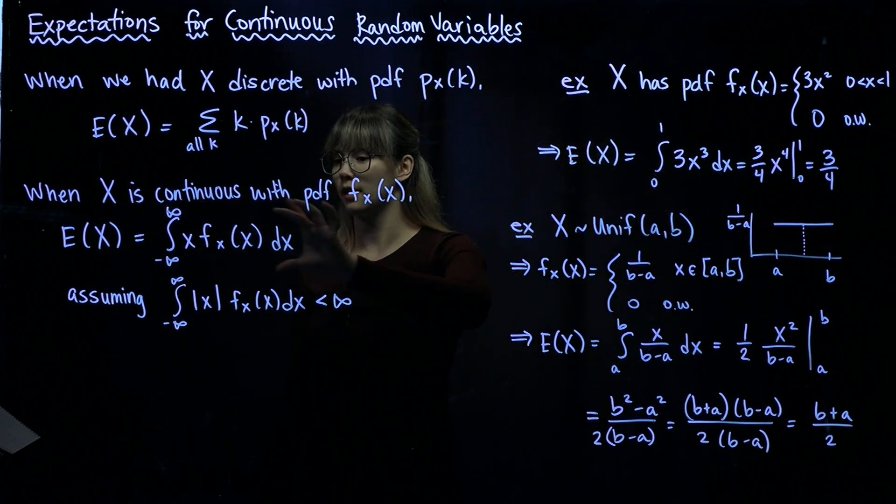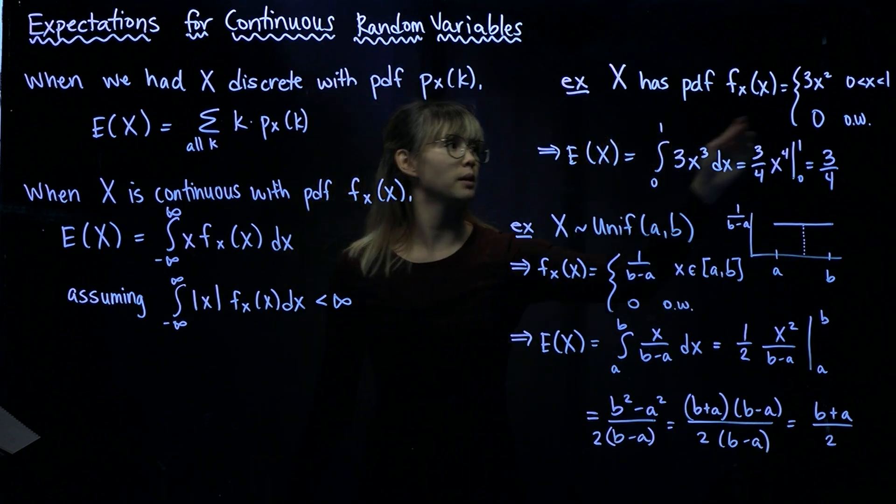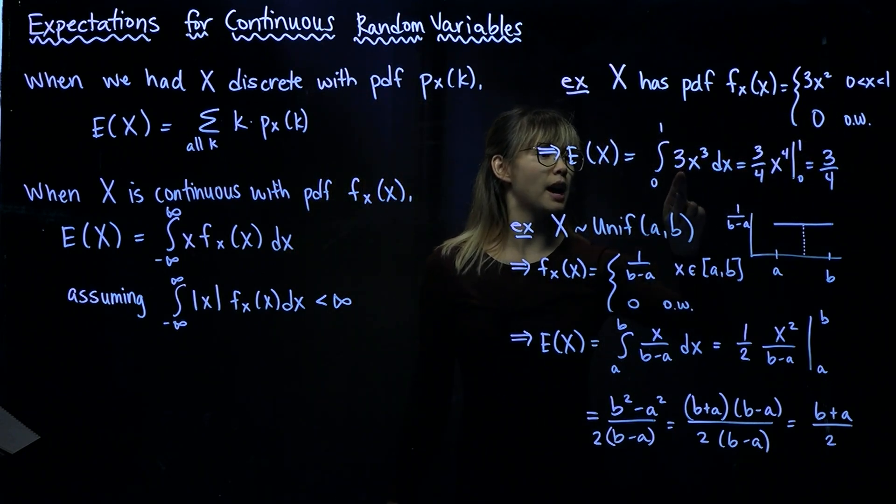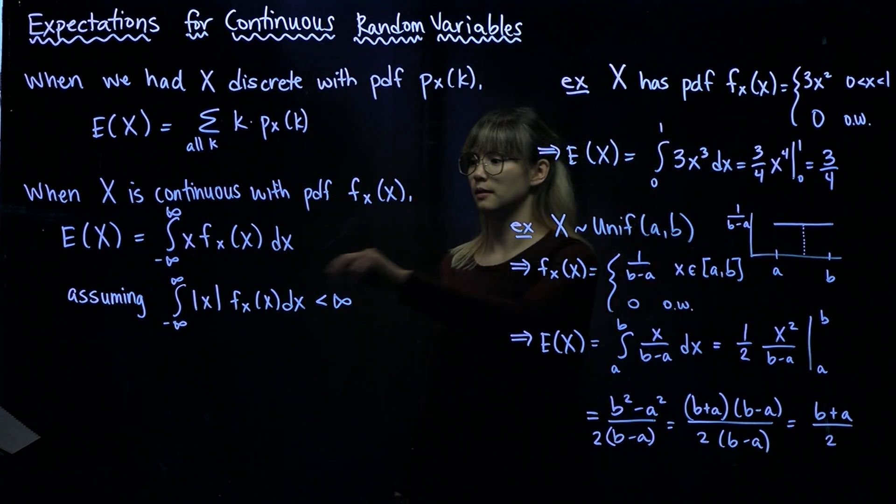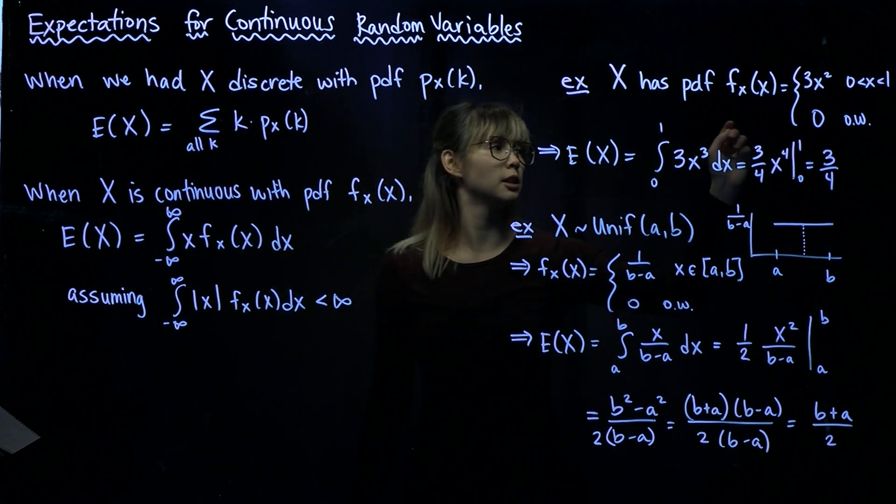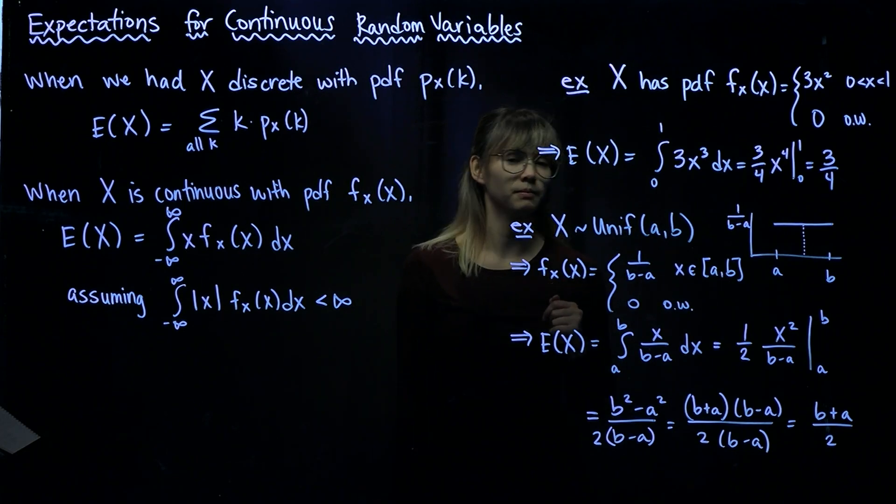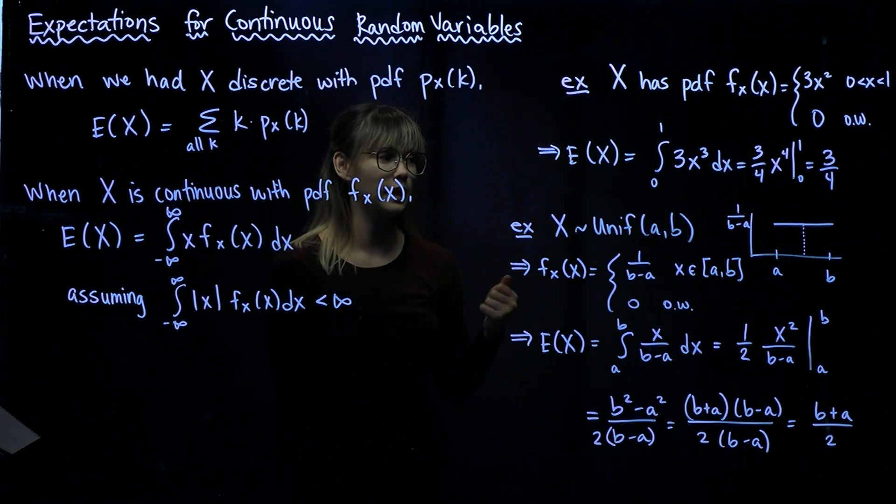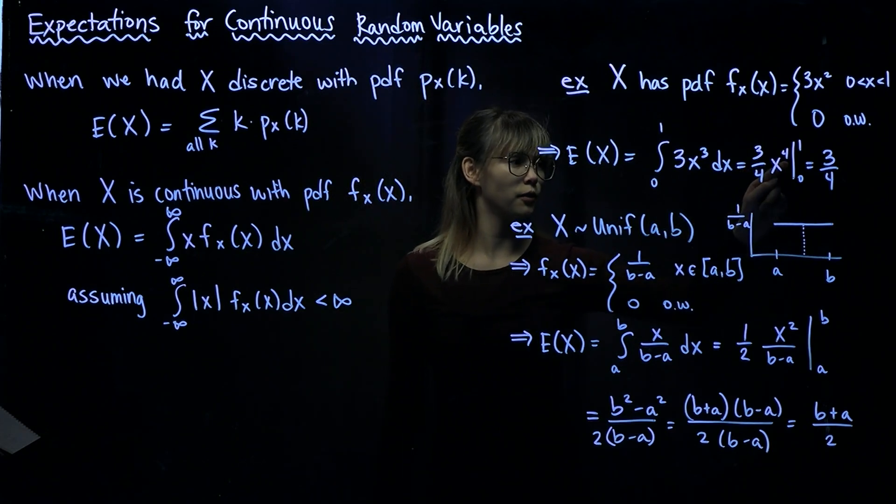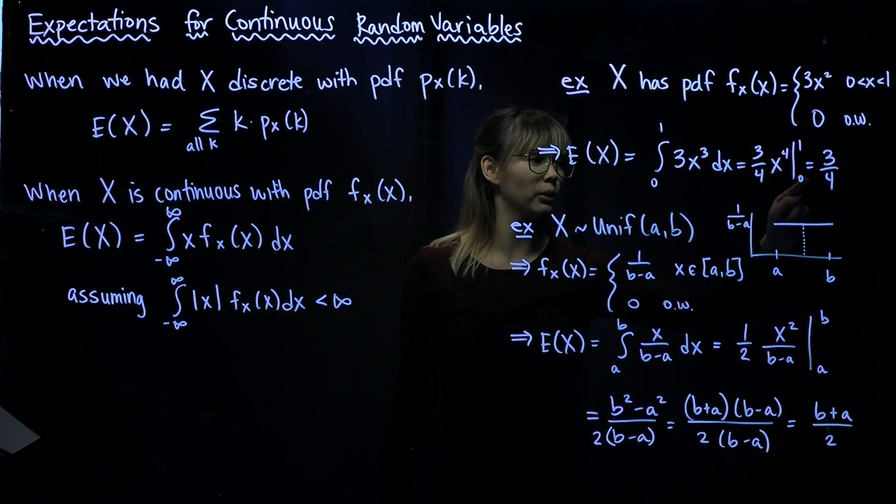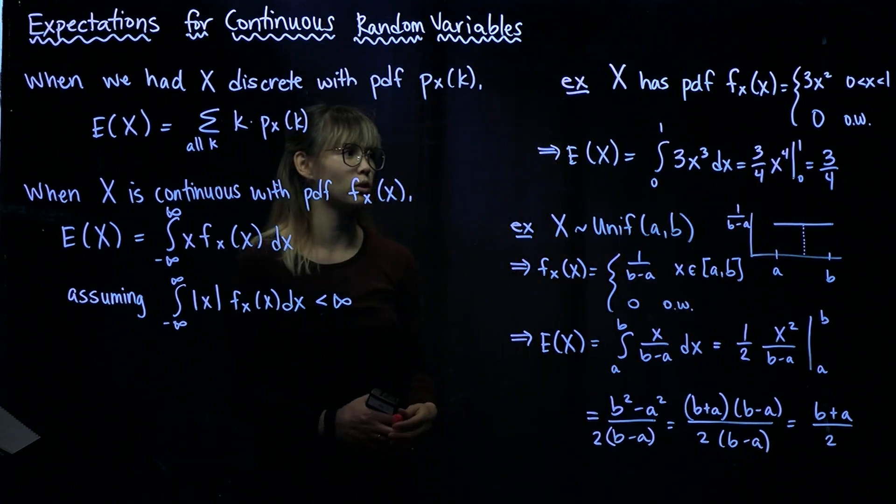All right, so we are going to rewrite this in the context of this problem here. So we're integrating from 0 to 1 because it's 0 otherwise, and then we have 3X squared times X. So our PDF is 3X squared whenever X is between 0 and 1, and then we have times X as this piece here. All right, now we just need to do a little bit of calculus. So this integral is equal to 3 quarters X to the 4, and we're going to evaluate that between 0 and 1. So that tells us that our expected value of X is 3 quarters.